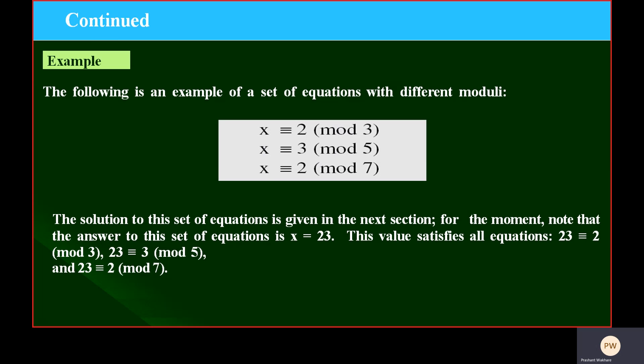How we can solve this example by using Chinese Remainder Theorem? We have to find one value that satisfies all the equations. Then your Chinese Remainder Theorem is applicable for this example.